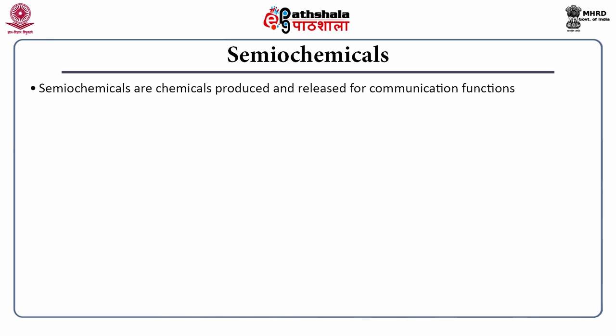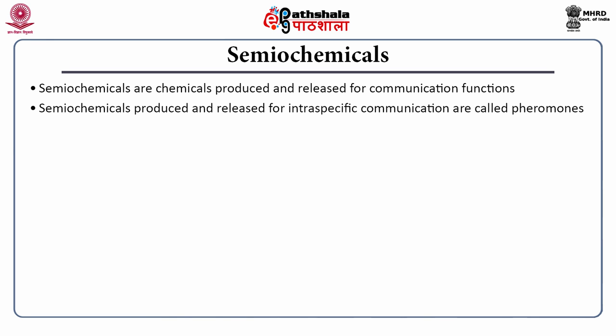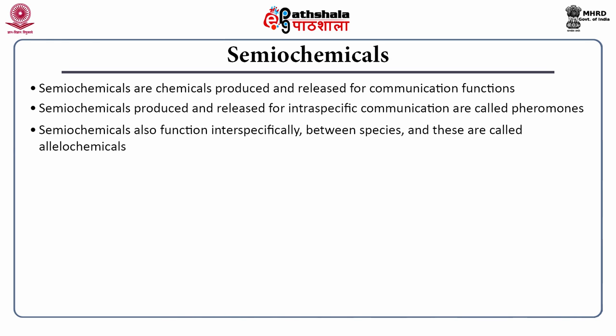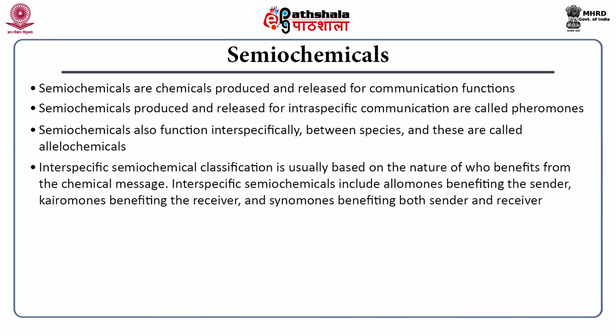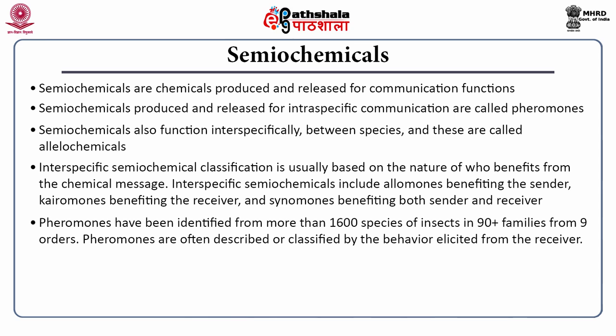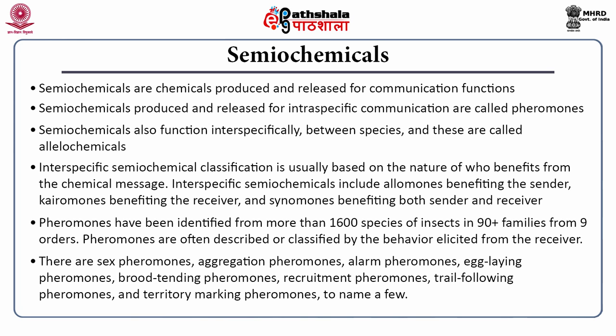Semiochemicals are chemicals produced and released for communication functions. Those produced for intraspecific communication — within the species — are called pheromones. Semiochemicals also function interspecifically between species and are called allelochemicals; their classification is based on who benefits from the chemical message. Interspecific semiochemicals include allomones benefiting the sender, kairomones benefiting the receiver, and synomones benefiting both sender and receiver. Pheromones have been identified from more than 1,600 species of insects in 90 families from 9 orders, and are classified by the behavior elicited: sex pheromones, aggregation pheromones, alarm pheromones, egg-laying pheromones, brood-tending pheromones, recruitment pheromones, trail-following pheromones and territory-marking pheromones.